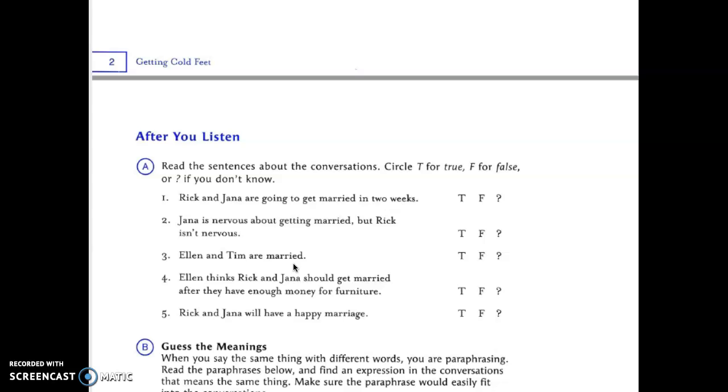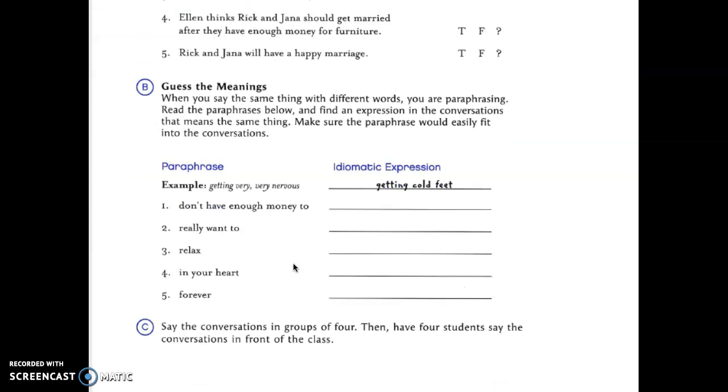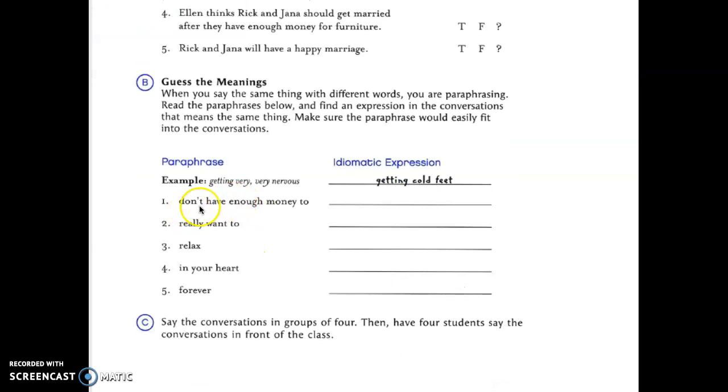Alan and Tim are married, yes. Alan thinks Rick and Jenna should get married after they have enough money for furniture, nope. Rick and Jenna will have a happy marriage, we don't know. So to get very nervous means to get cold feet. You're gonna change your mind, you don't want to deal with a situation. Don't have enough money means can't afford to. Really want to is dying to. Relax, chill out, calm down. In your heart, deep down. Forever, for a marriage.